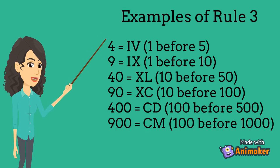Examples for Rule 3: 4 equals IV, 1 before 5. 9 equals IX, 1 before 10. 40 equals XL, 10 before 50. 90 equals XC, 10 before 100.